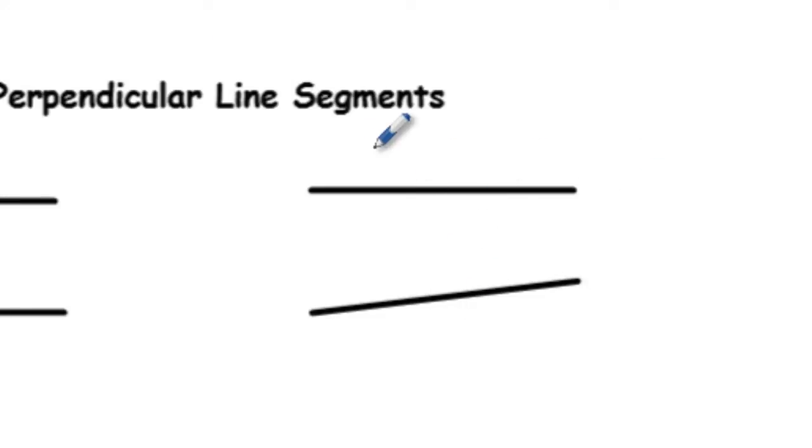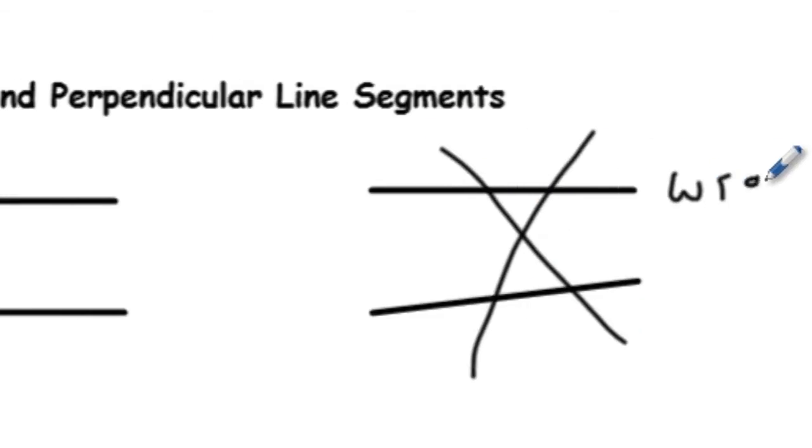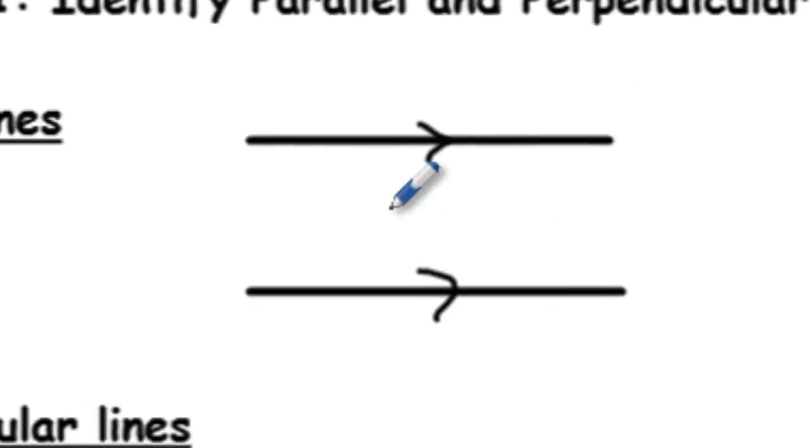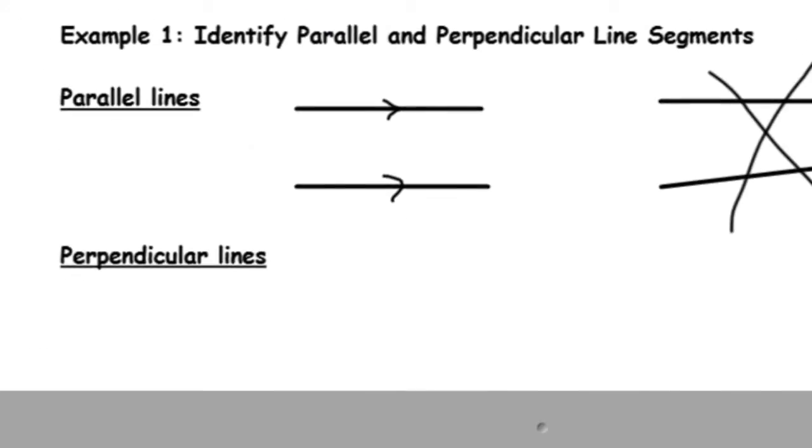So over here you're going to say this is wrong. And over here you're going to put two arrows. This is the proof. Those arrows are telling the person looking at these lines that they are indeed parallel. Now there's ways to prove that they're parallel. We're going to look at that later on in this lesson. But first, let's take a look at what perpendicular lines are.